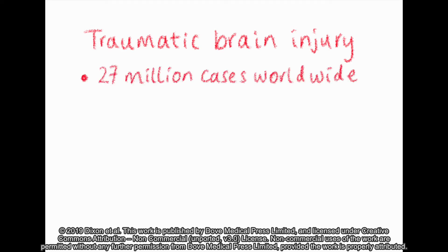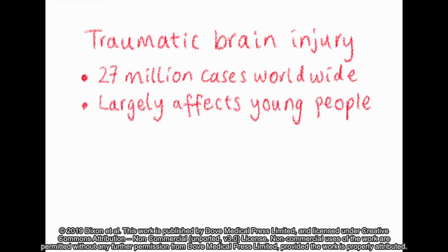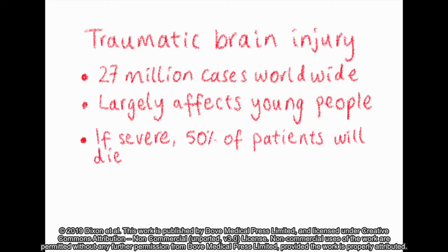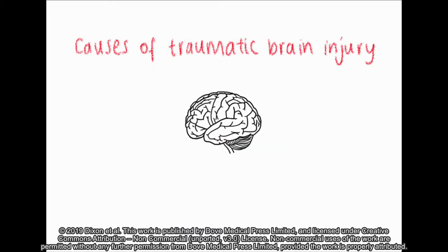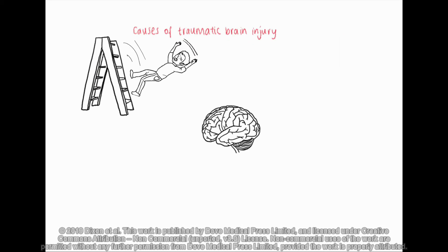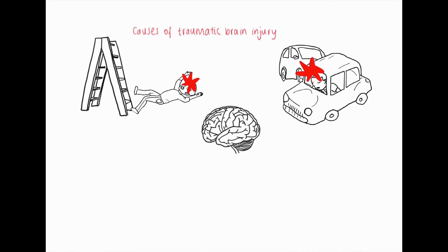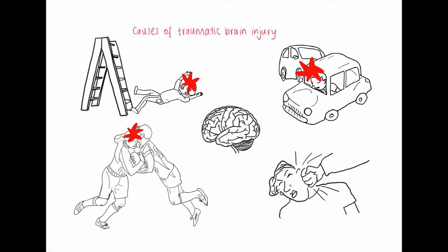Traumatic brain injury is a big problem worldwide with over 27 million cases. TBI largely affects young people. If the brain injury is severe, 50% of people die and of those that survive, about two-thirds will be left with lifelong disability. Causes of traumatic brain injury include falling, motor vehicle accidents, sporting injuries, and assaults.